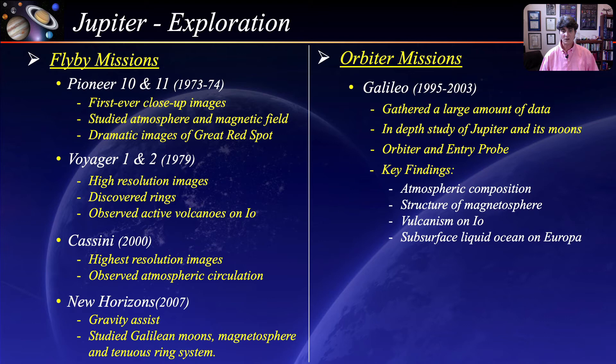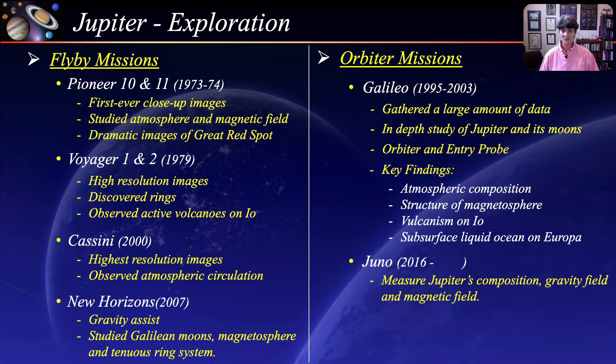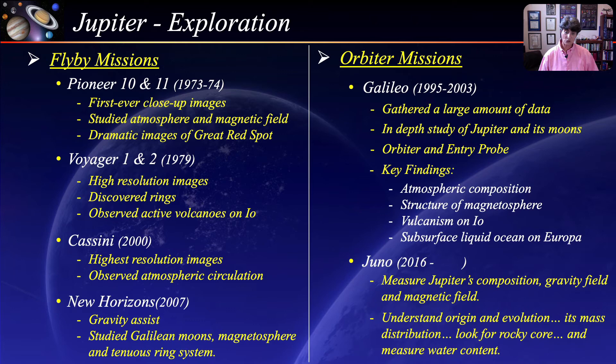Juno is the current NASA mission to Jupiter, launched in August 2011 and entering orbit in July 2016. Its mission is to study Jupiter's composition, gravity field, and magnetic field. Juno is also searching to understand the origin and evolution of the planet, determine its mass distribution, look for a solid planetary core, and measure water and ammonia in the deep atmosphere. Juno's mission has been extended to July 2021, after which it will intentionally de-orbit into Jupiter's atmosphere.